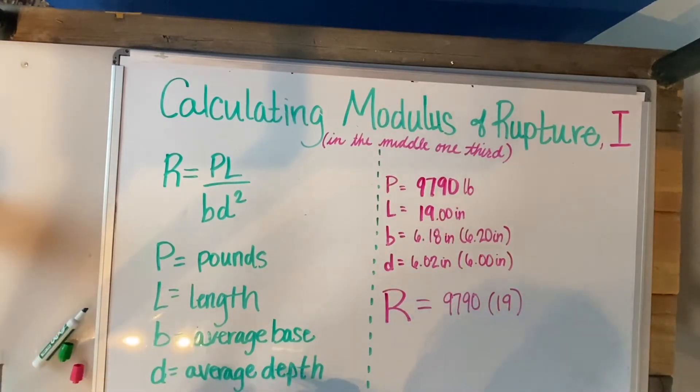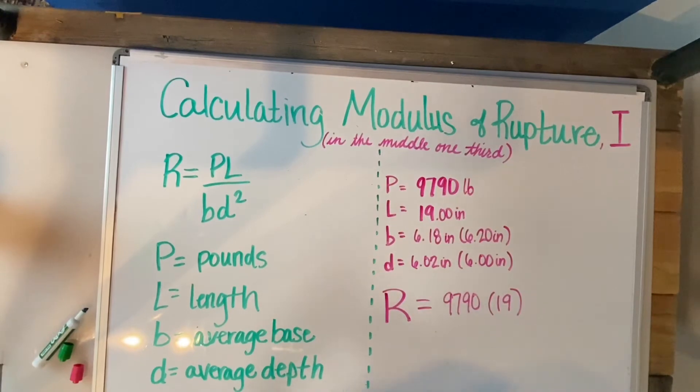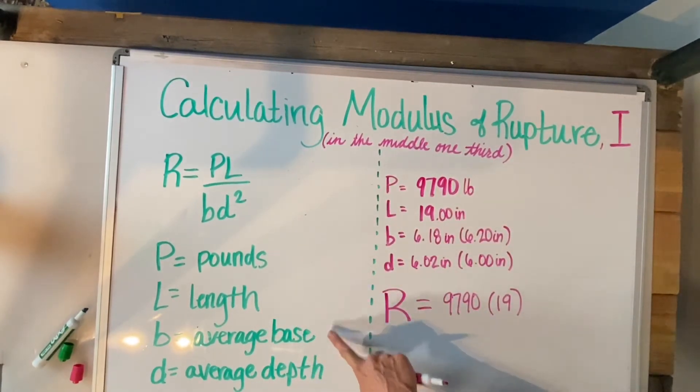So today we're going to be using the calculation PL over BD squared where P is pounds, L represents length, B is average base, and D is average depth.